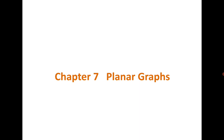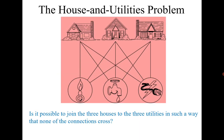Good morning everyone. Today we are going to start a new chapter: planar graphs. Consider the following problem: there are three houses and three utilities. Can you think of joining them such that none of the connections cross? Because if they cross, it creates a problem — for example, if an electric wire crosses with a water pipeline, there may be issues.